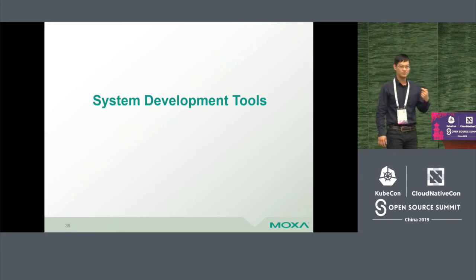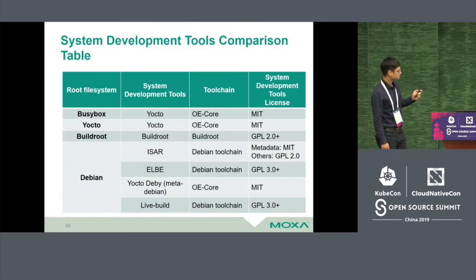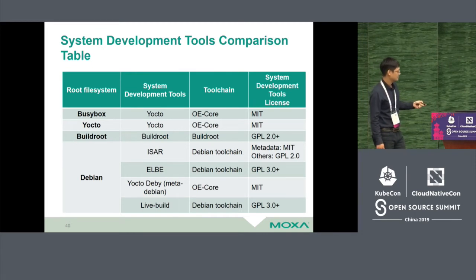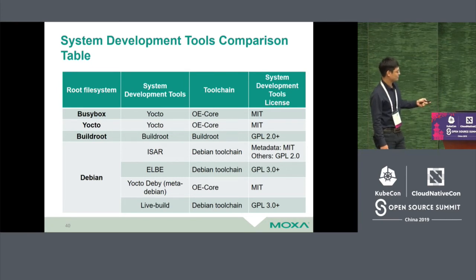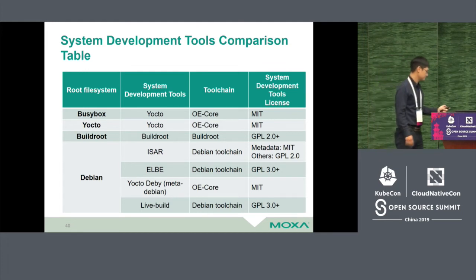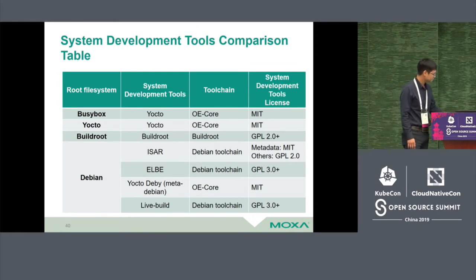So we have bootloader, kernel, root filesystem, and more. We need system development tools like Yocto, Buildroot, or Debian-specific tools. You can use Yocto to build a BusyBox root filesystem, use Buildroot to build a Buildroot root filesystem, or use many tools to build a Debian root filesystem. I also list the toolchain support and licenses so you can choose what you want. live-build is a very powerful tool for Debian development — many derivatives and distributions use live-build to customize Debian, such as Kali.